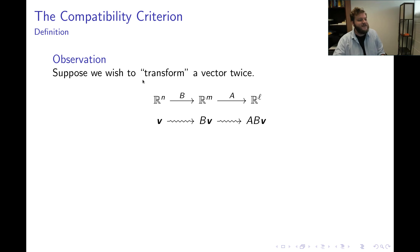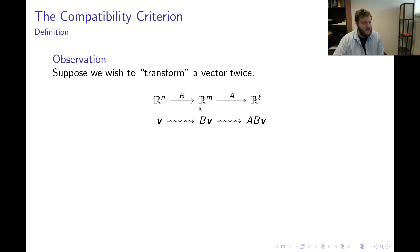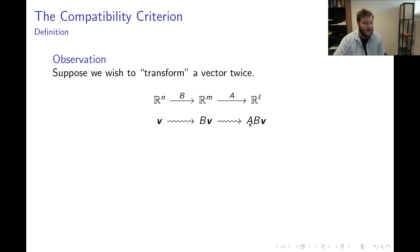So let's say that I want to transform some vector twice. That vector starts out in Rn. I can use an M by N matrix B to take that vector V into Rm — so B times V lives in Rm. Then maybe I want to transport that vector to another dimension Rl by multiplication by an L by M matrix A. Ultimately, this produces a new vector A times B times V.